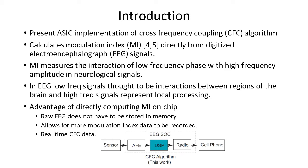This ASIC calculates the CFC metric directly from digitized EEG signals. Interactions between different frequency ranges have been studied in neural processing and are believed to be how information is processed and controlled in the brain. The modulation index specifically looks at the phase of the low-frequency signal modulating the amplitude of the high-frequency signals. The low-frequency signals represent global processing, and the high-frequency signals represent more local processing of stimuli or information. The phase of the low-frequency signal might suppress some stimuli or processing while boosting others.